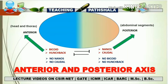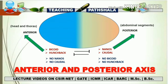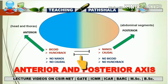The hunchback protein leads to the expression of the anterior portion. Bicoid inhibits the expression of nanos and caudal at the anterior portion — that is why nanos and caudal are only expressed in the posterior. Bicoid prevents nanos and caudal from expressing in the anterior. Similarly, nanos and caudal inhibit bicoid and hunchback at the posterior so that bicoid and hunchback do not express in the posterior portion.